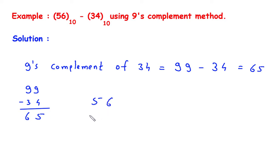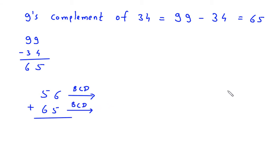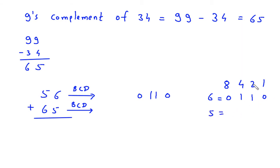So 56 plus 65. Since we are doing this in BCD, we will convert 56 and 65 into BCD. BCD is an 8421 code. First, convert 6: 6 in BCD is 0110. Then 5 in BCD — 5 equals 4 plus 1 — is written as 1010. So 56 in BCD is 0101 0110.